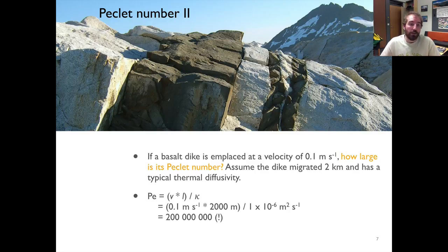All right, this case it's even easier. We're just going to simply calculate the Peclet number with this velocity and this distance. So 0.1 meters per second, 2,000 meters for the distance, and then here is our thermal diffusivity. And what you come up with is a Peclet number of 200 million.